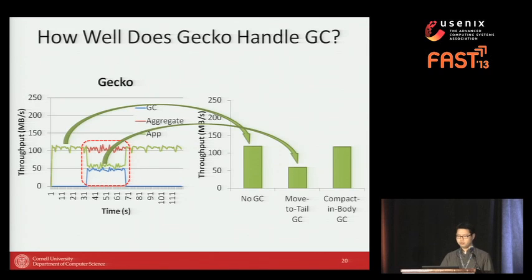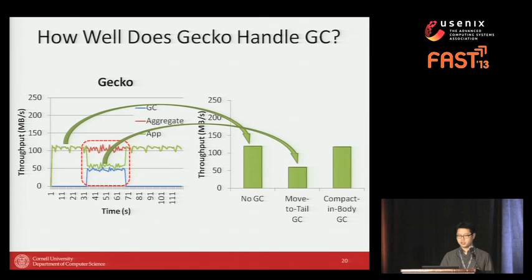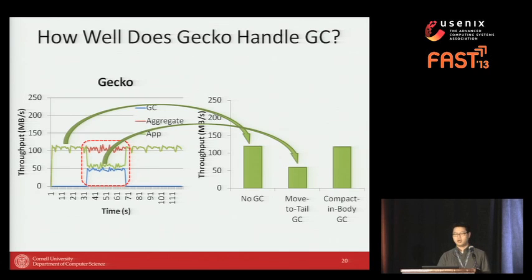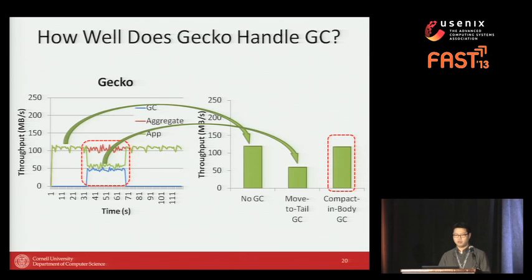Using the smarter in-body cleaning scheme, the application throughput can be further increased to always achieve the maximum throughput of a single drive, compared to the baseline case where GC shares bandwidth with the application.